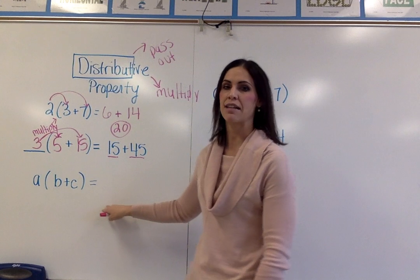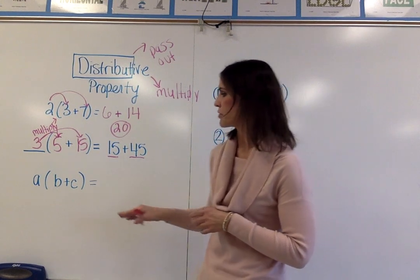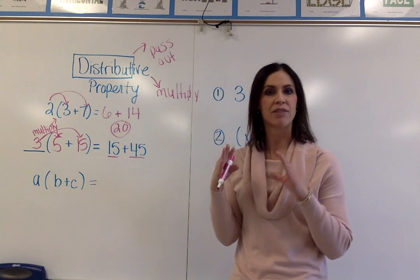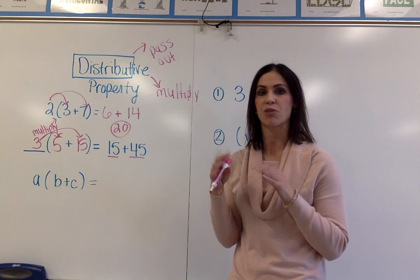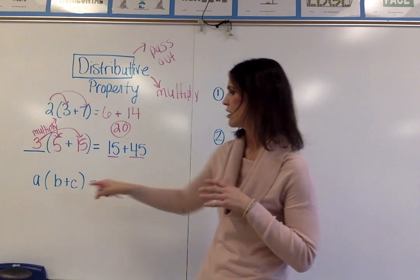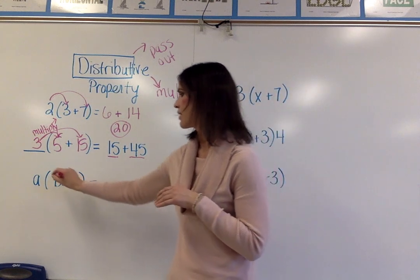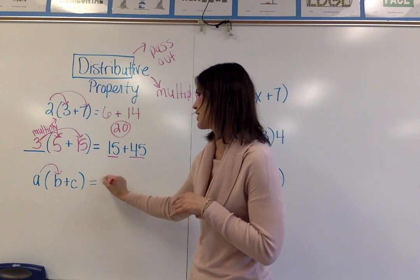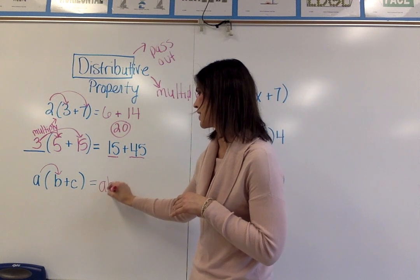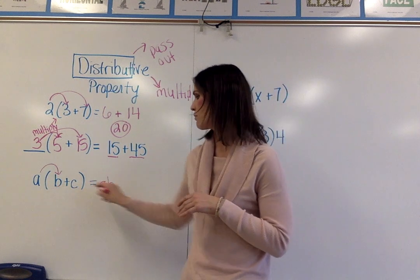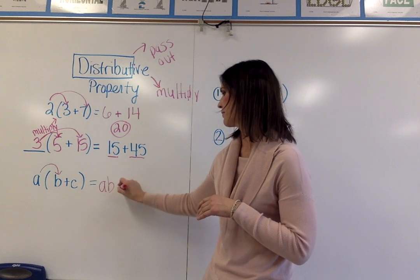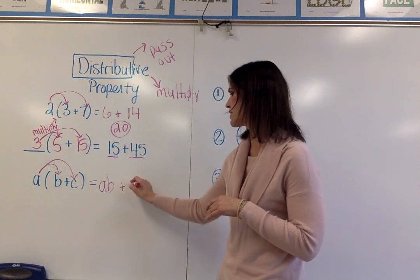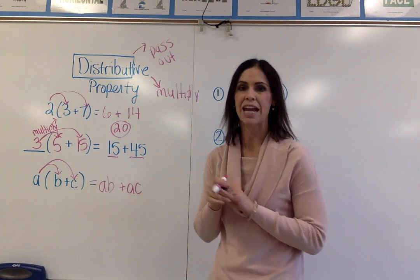In the last example, they're showing it with variables. They're saying A times the quantity, so oftentimes when we have a set of parentheses, it's referred to as a quantity, which is an amount, B plus C. So I multiply A times B, which is just written as AB because I'm multiplying two variables. Then I'm going to put my addition symbol, and then I'm going to multiply A times C. And A times C is just AC.